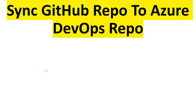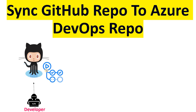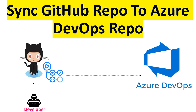In this video, I will show you how to sync a GitHub repository to an Azure DevOps repo using GitHub Actions. Here we have the GitHub repository where developers are working on the source code, and whenever they commit changes to the GitHub repo, it will invoke the GitHub Actions pipeline that would actually sync the entire GitHub repository to the repo imported in Azure DevOps.